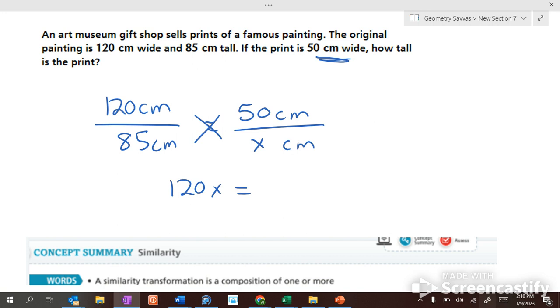120 times x equals 85 times 50. Somebody take 85 times 50 and divide by 120. Something 0.5, right? Something 0.4? What is it? 35.4-ish. Ish. Okay? It is about 35.4 centimeters tall. Okay?